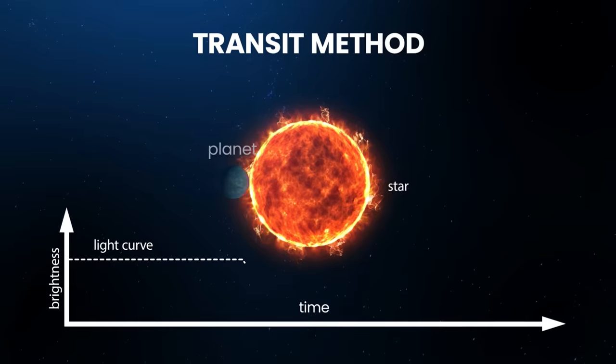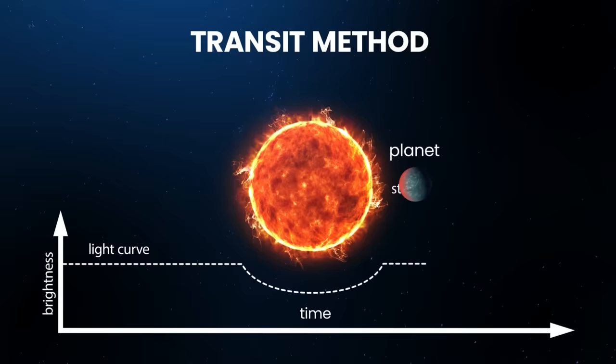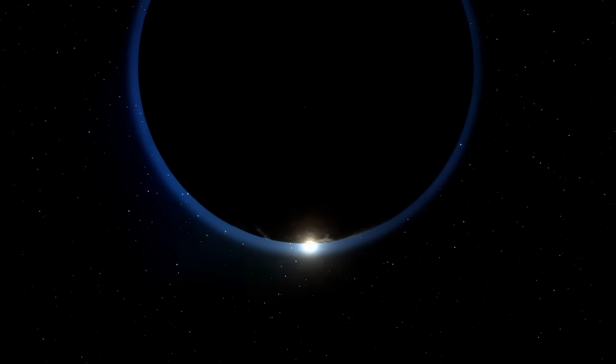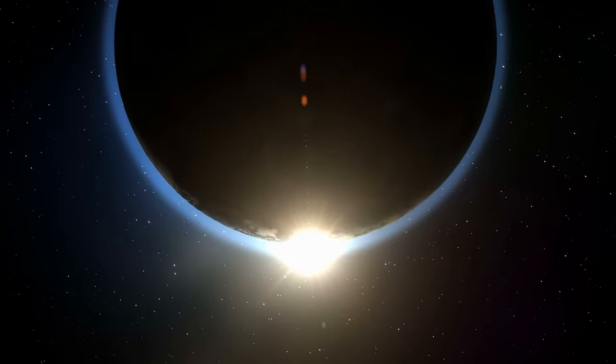It essentially means that if a planet passes in front of a star, the light from the star dims slightly, and that's how we can tell that there's a planet there. The level of dimming and how long it lasts gives us important information about the size and orbit of the planet.